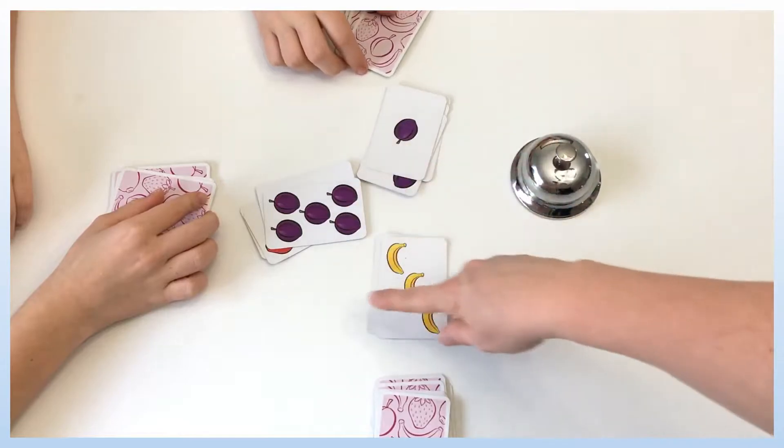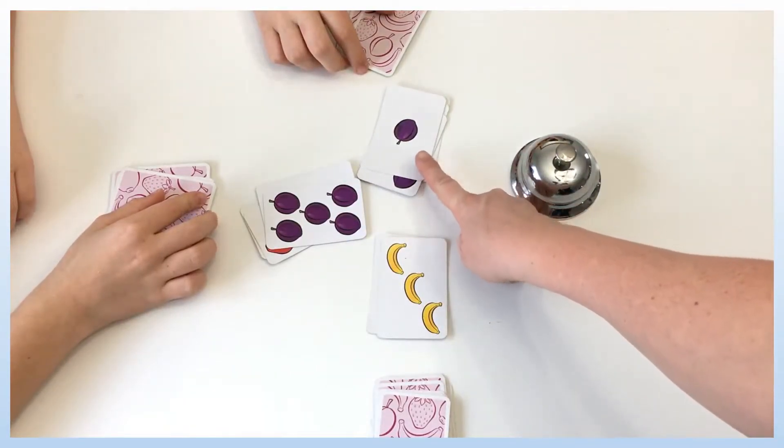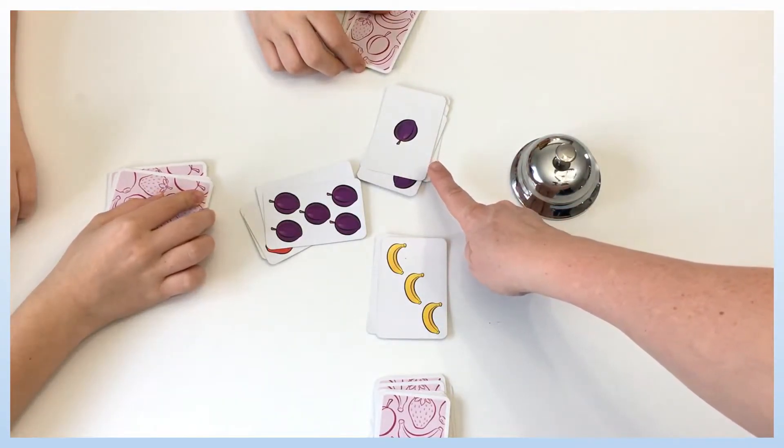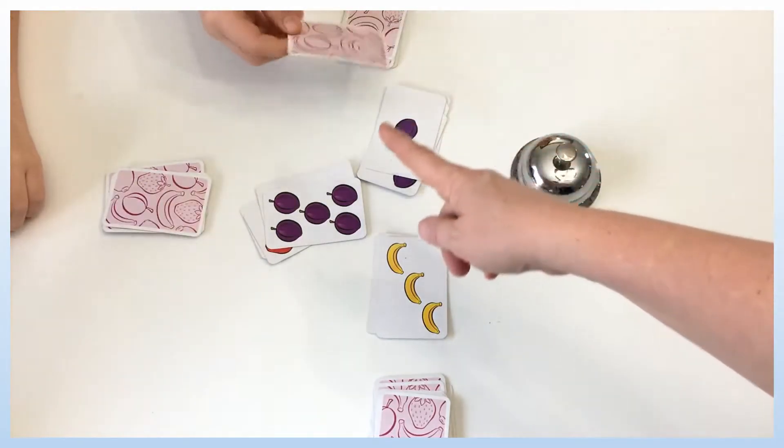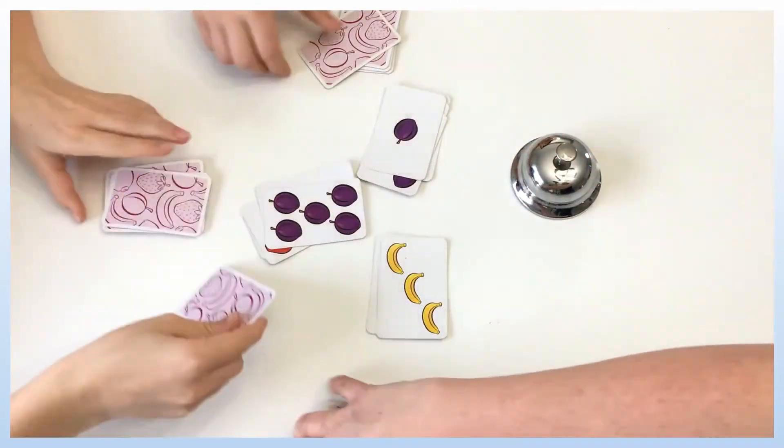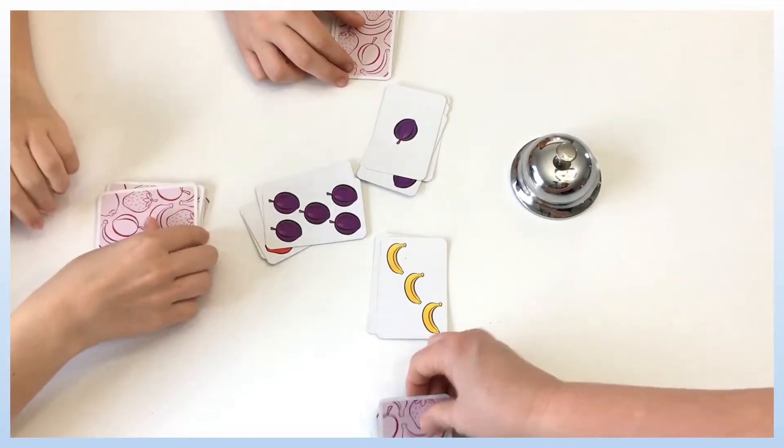So when there's a mistake like this and the player rang when he should not have done, he has to give one card from his deck for each player. And then we continue.